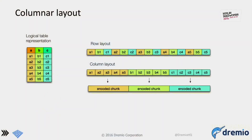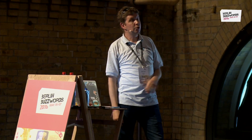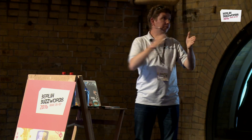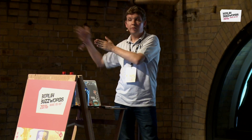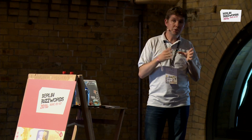Columnar layout: think of any type of table. Here I have a simple example with three columns, A, B, and C. When you represent it in a computer, whether on disk or in memory, you need a linear representation. With a row layout, you put each row after the other — A1, B1, C1, A2, B2, C2 — with values from different types interleaved. With a columnar layout, you put all values for one column together, then the second, then the third, grouping values of the same type that are much more homogeneous.